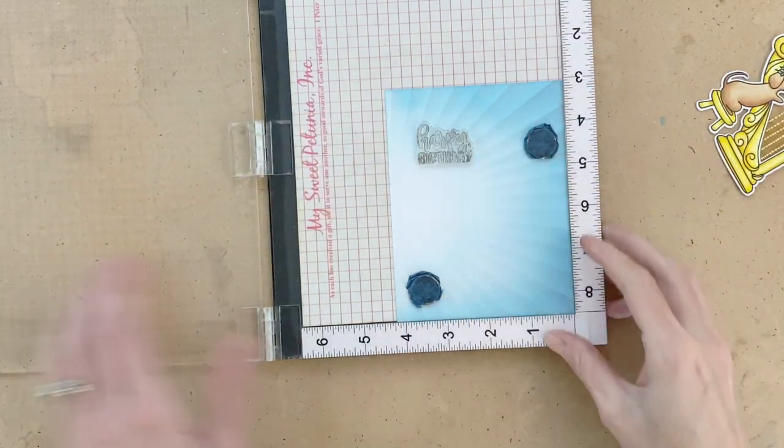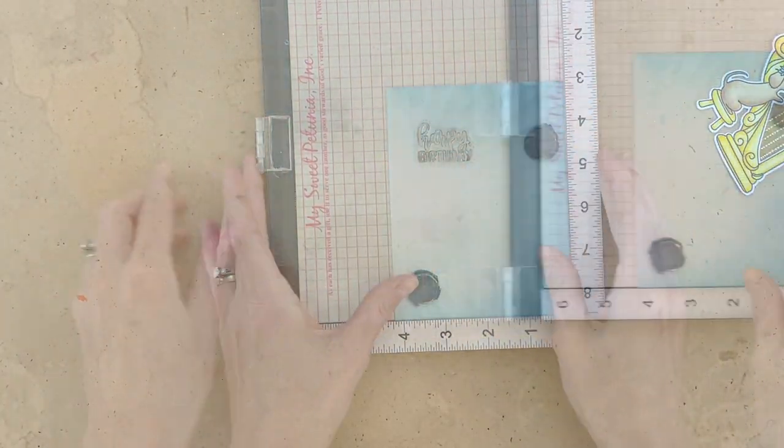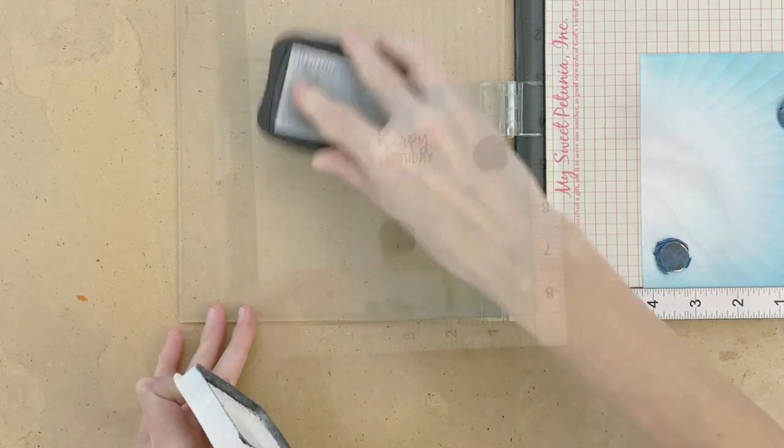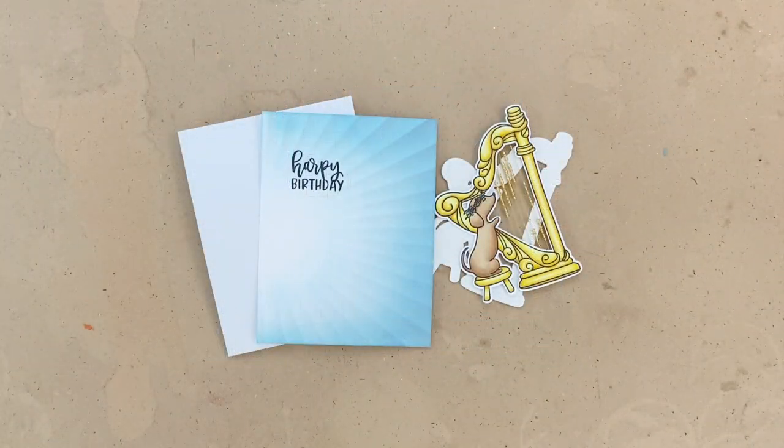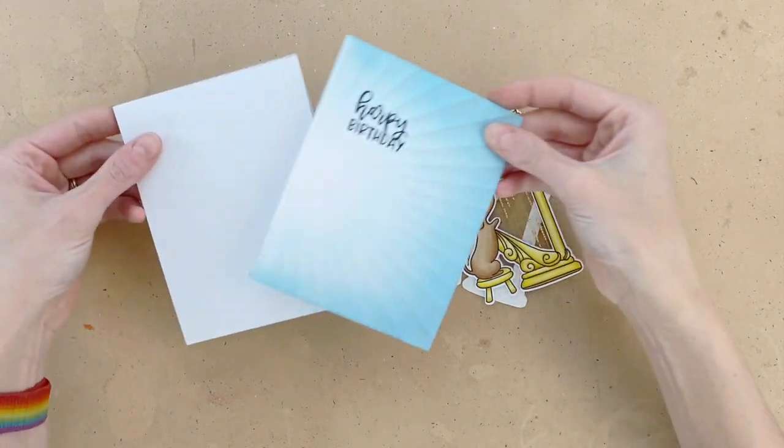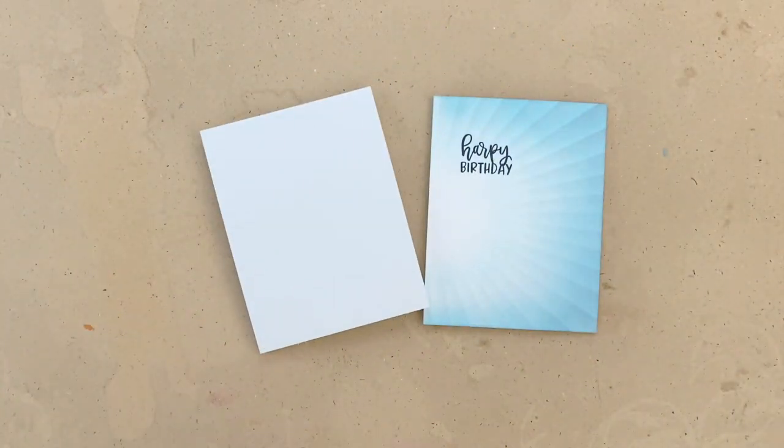Now that I have kind of my main element done, I'm going to use that to kind of help me figure out where I want my sentiment to go. This sentiment says harpy birthday of course, it's from the harpy birthday stamp set. I just positioned it, picked up my MISTI, stamped it in memento tuxedo black and now I'm going to put this all together.